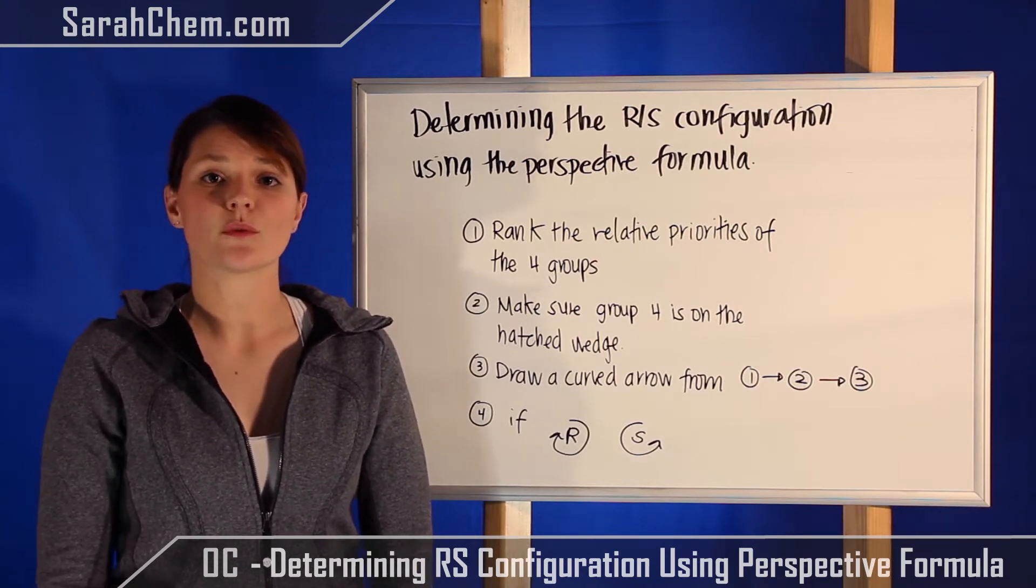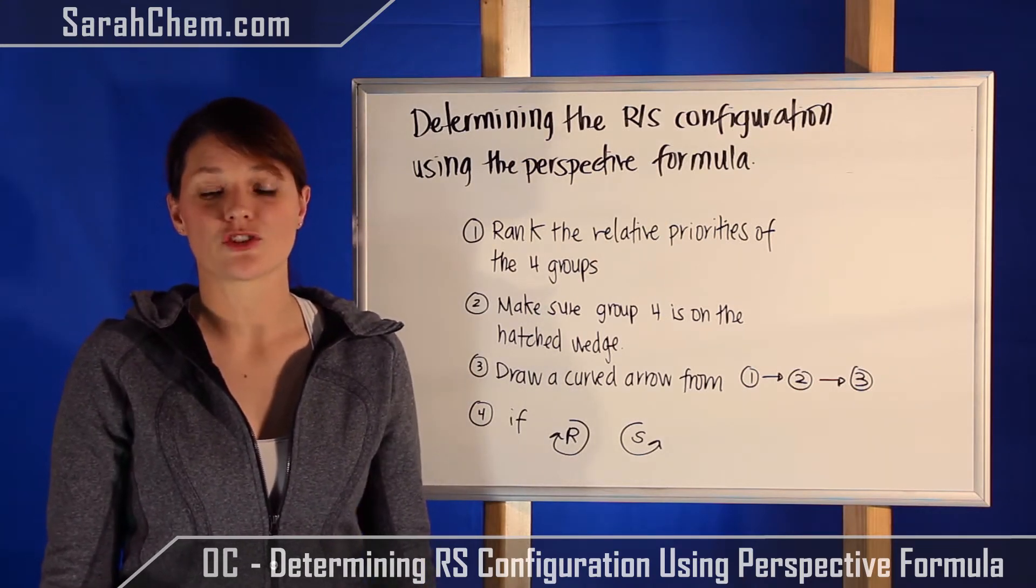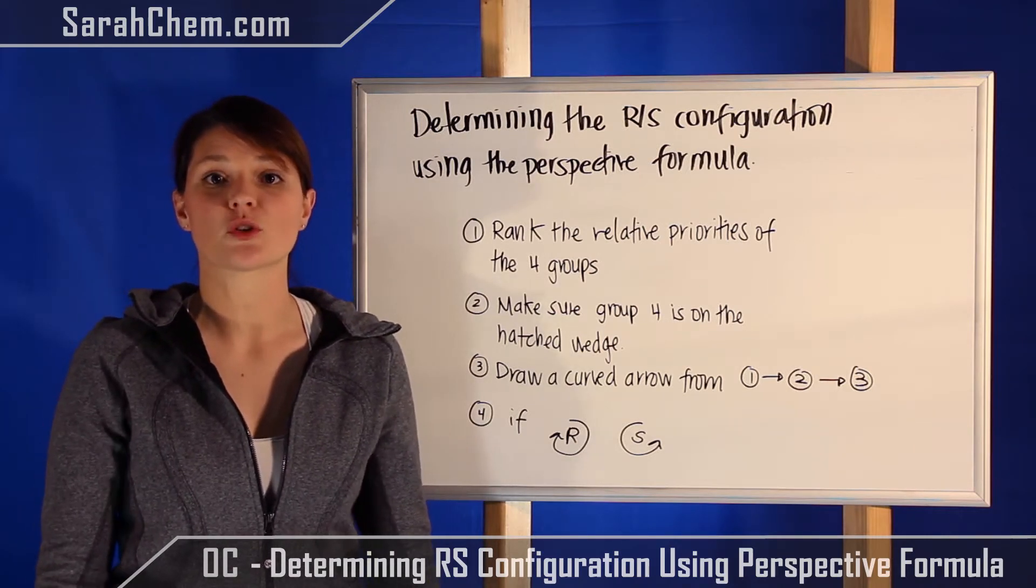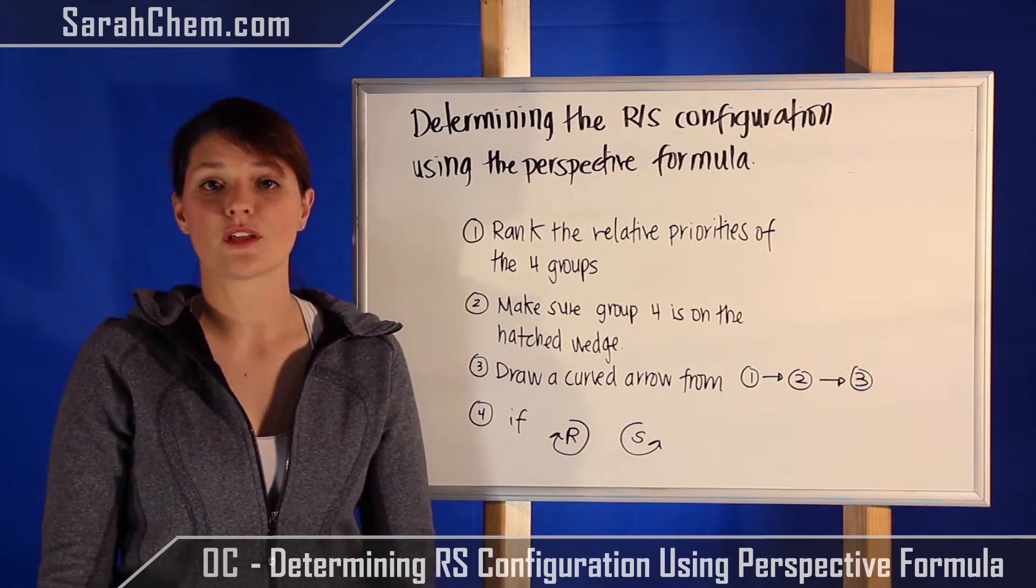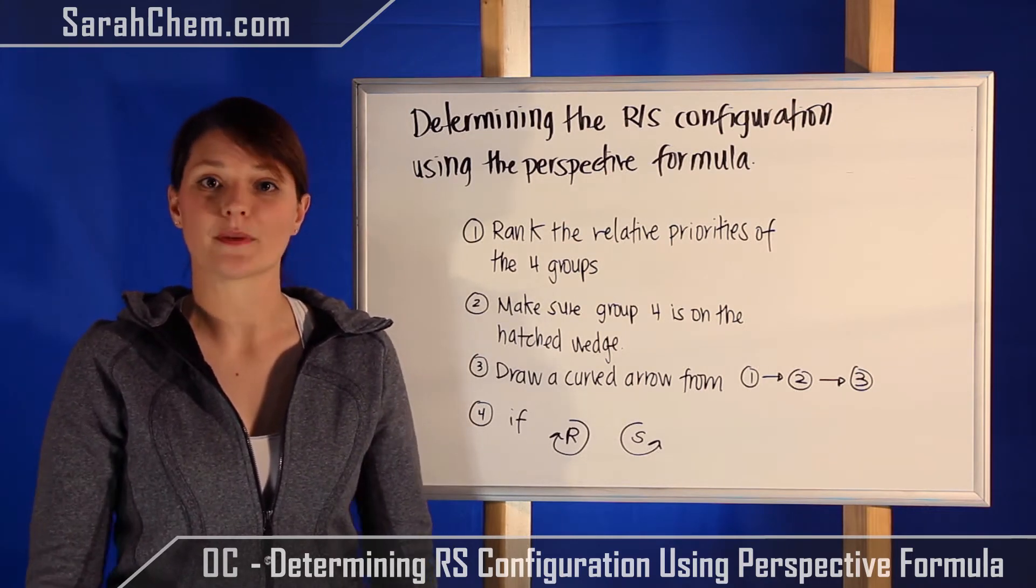Remember that R and S don't tell you anything except nomenclature. This is how we can look at a compound and distinguish between two enantiomers. It does not tell us anything about dextrorotary or levorotary aspects of our particular compounds.